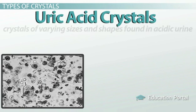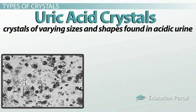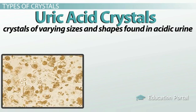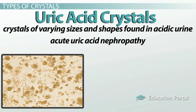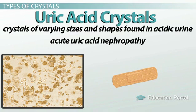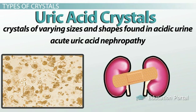Uric acid crystals are crystals of varying sizes and shapes found in acidic urine. Shapes can resemble rhomboids, parallelograms, and rosettes. They tend to be amber in color and are an indicator of disease processes such as acute uric acid nephropathy. This is a condition that develops as a result of certain cancer treatment strategies which cause increased cell and tissue destruction, the release of a lot of uric acid thereafter, and subsequent obstruction of the kidneys with uric acid crystal overload. This eventually results in kidney failure.